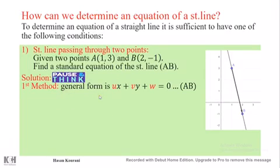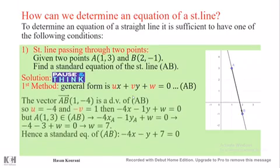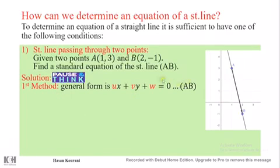First method is based on considering the general form of standard equation which is ux + vy + w = 0. Now as you know, the general form of coordinates of standard equation are a minus vu and minus vu, and here we have to think about a direction vector for the straight line.